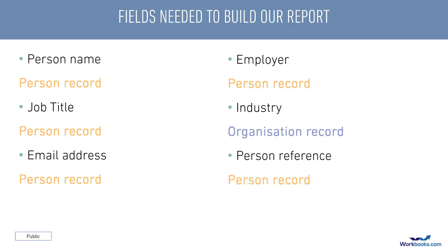So how are we going to get the industry information from the organisation record? The employer field is highlighted because people and organisations are joined together using the employer field. There's also a triangle next to the field and you'll see what that triangle represents when we're in Workbooks building this report. Hopefully you can see that we should base our report on people records because that's where the majority of these fields are, and then introduce the industry field from an organisation record.